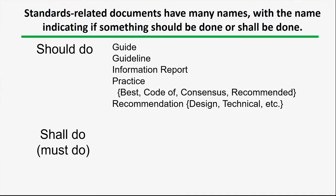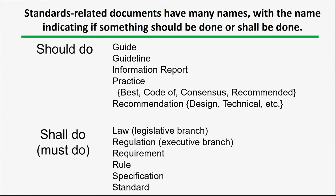In addition, there are documents that say what shall be done or what you must do. Those include a variety of laws, regulations, rules, specifications, and standards. What I want to emphasize is that although there are these two broad categories, sometimes something like a guideline — which is in the 'should' category — can appear in parts regarding what shall one do. And there are other times documents like laws that might just say what you should do. So a document in one of these categories is not strictly only shoulds or shalls, but there can be a mixture.